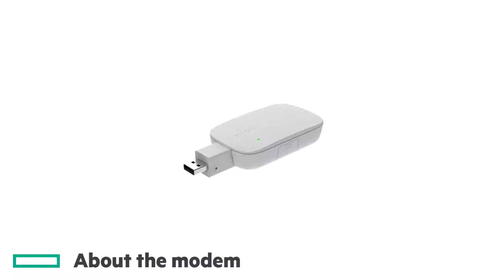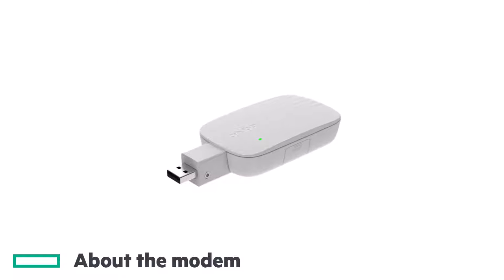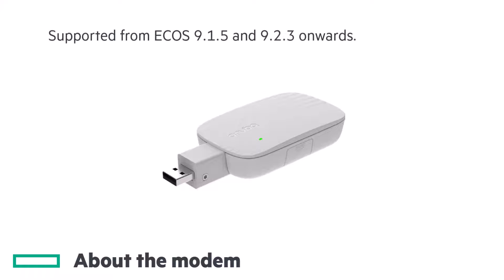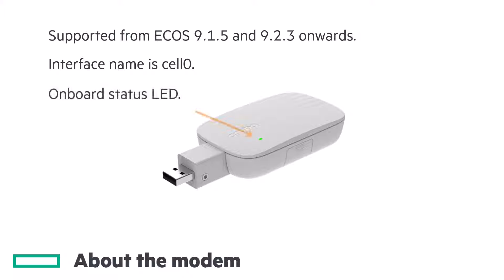The USB LTE modem is an add-on module supported on most of our EdgeConnect hardware platforms, and it provides cellular WAN connectivity. It is supported from ECOS 9.1.5 and 9.2.3 onwards. It presents itself in the UI like any other WAN interface, and it's referred to as cell 0. There is an onboard LED which shows green in normal operation.